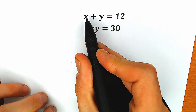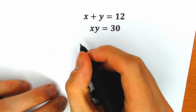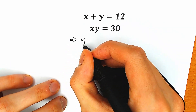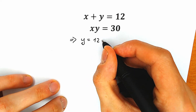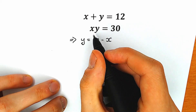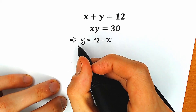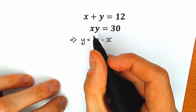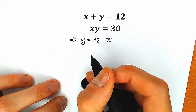First of all, from the first equation x plus y equals 12, let's express y. So y equals 12 minus x. Now we have the same y in the second equation, but we're going to plug in 12 minus x instead of y. So let's plug in this expression into the second equation.